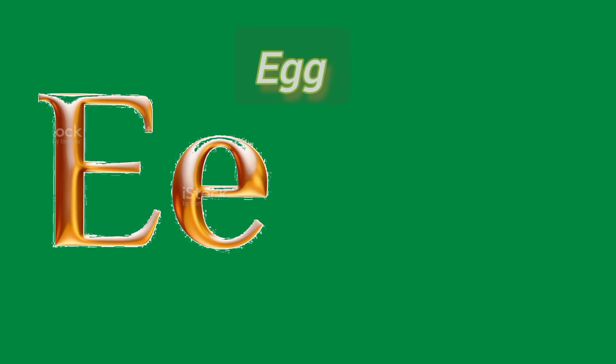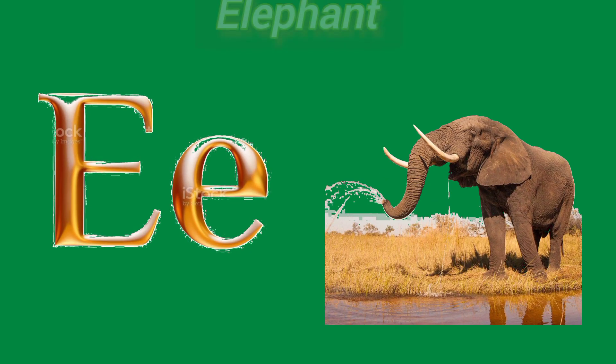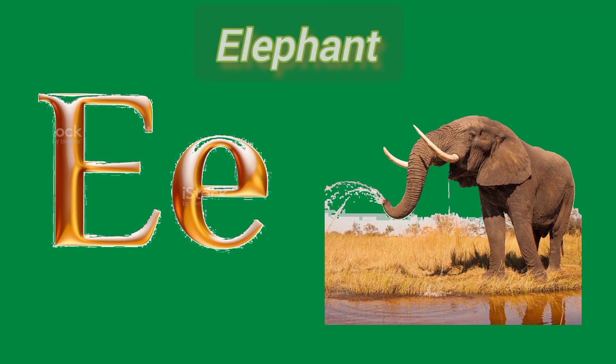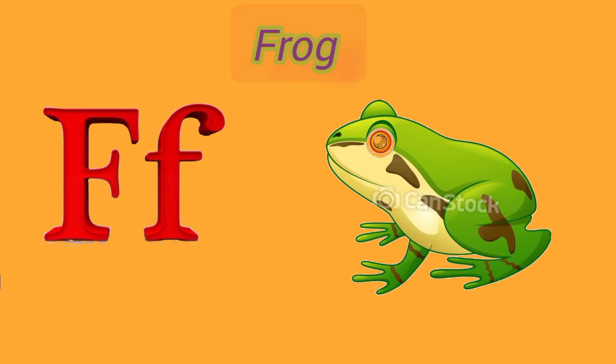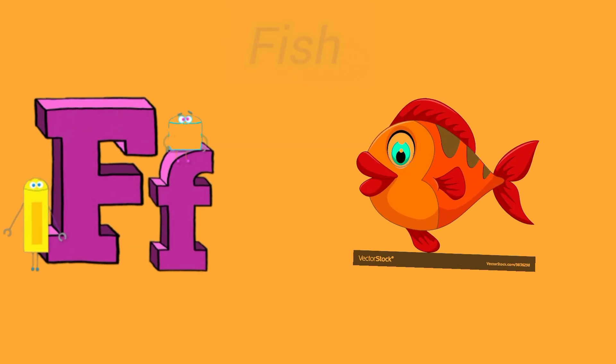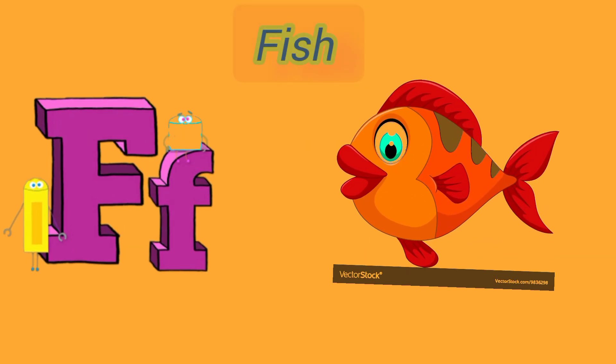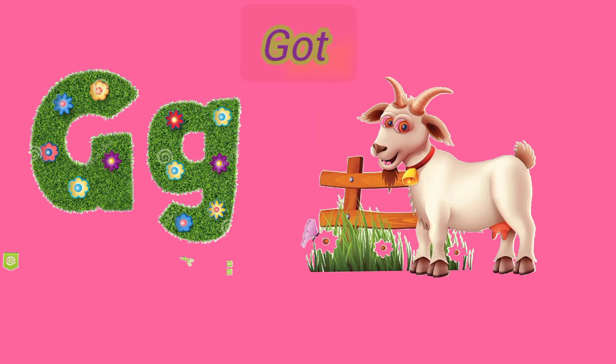E for egg and E for elephant. A. A. F for frog and F for fish. Fish. Fish. Fish.